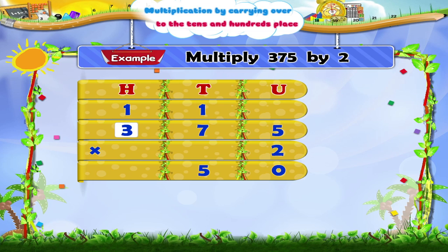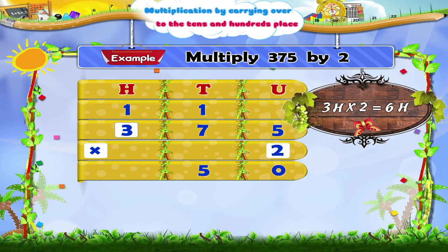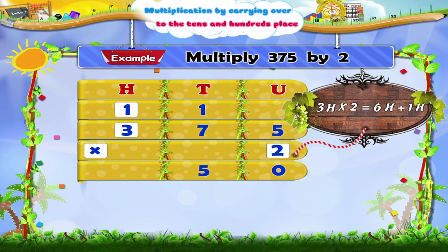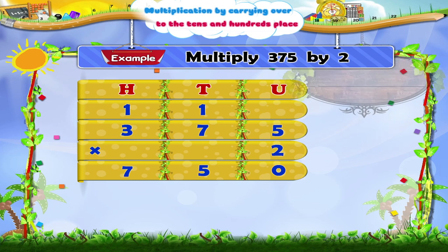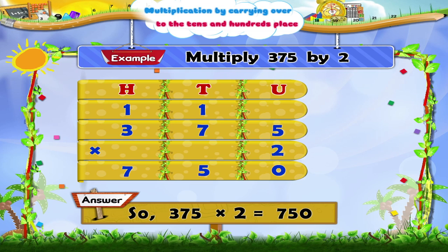Now multiply the hundredths digit 3 in 375 by 2. We get 6 hundredths. Add to this the carried over 1. We get 7 hundredths. Write it in the product in the hundredths place. The product is 750.